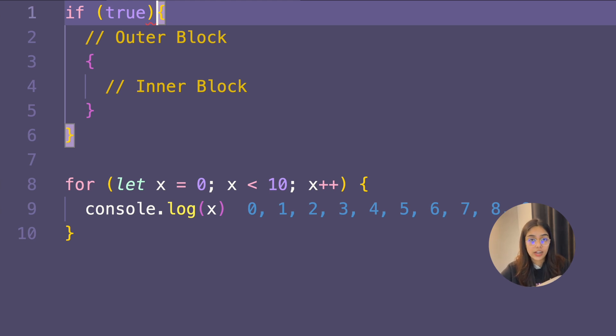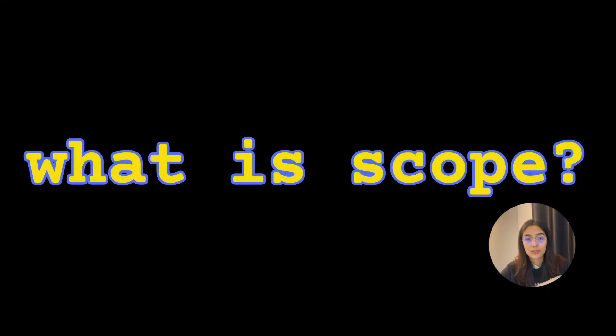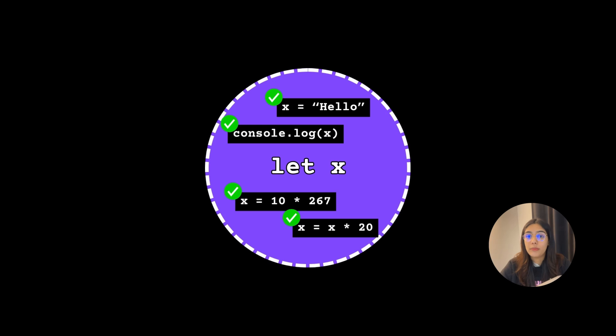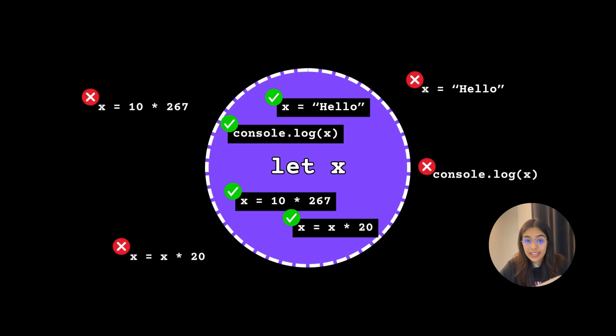Now that you understand what a block is, let's understand scope. You can think of scope as a hypothetical area or time in your program where a certain variable is accessible and visible. For example, when you try to use x inside its scope, you're able to access it — print it, manipulate it, assign values, perform operations on it. But as soon as you go outside of the scope and try to access x, you will land into errors.